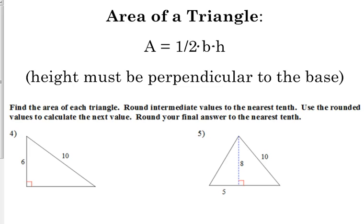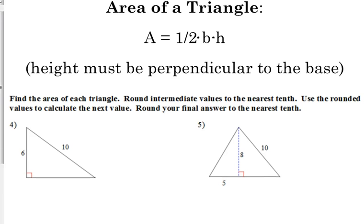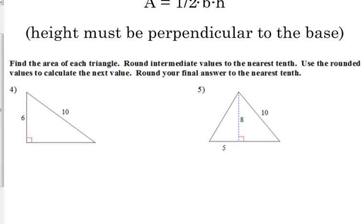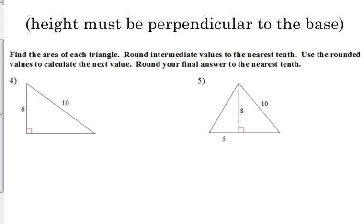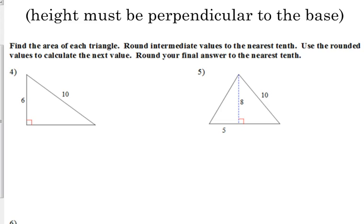So, we're going to find the area of the triangles, and it says round intermediate values to the nearest tenth. Use the rounded values to calculate the next value, round your final answer to the nearest tenth. So, I'll explain what all that means here in just a second. Okay, so on number four, if we're trying to find the area of that triangle, can we find the area of it as is? No. We've got to find the base. Okay, we've got the height, and we have the hypotenuse, but we do not have the base.